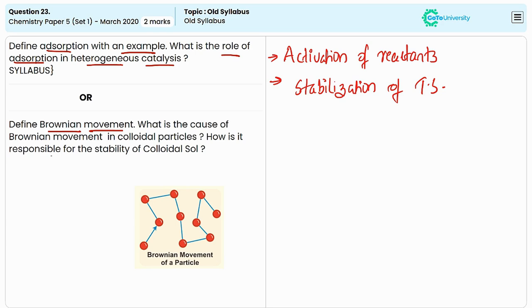So, the Brownian movement contributes to the stability of colloids by keeping the particles in constant motion, which helps to prevent their aggregation and settling.